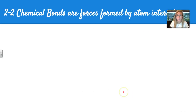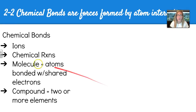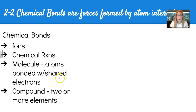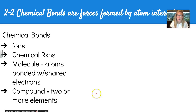Chemical bonds are forces formed by atom interactions — they can form ions. When you break or form a bond, you are going through a chemical reaction. When atoms bond with shared electrons, you get molecules. Two or more elements put together are compounds.